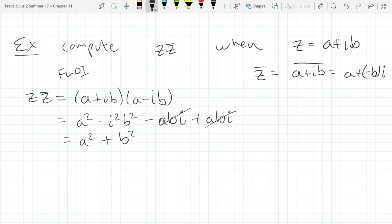So we get a squared plus b squared. Now this has a special meaning. This is the magnitude or modulus or absolute value. Now you may think that's a little weird. Why is it the absolute value?